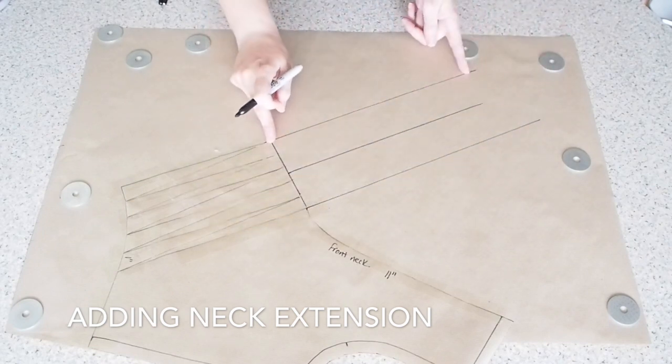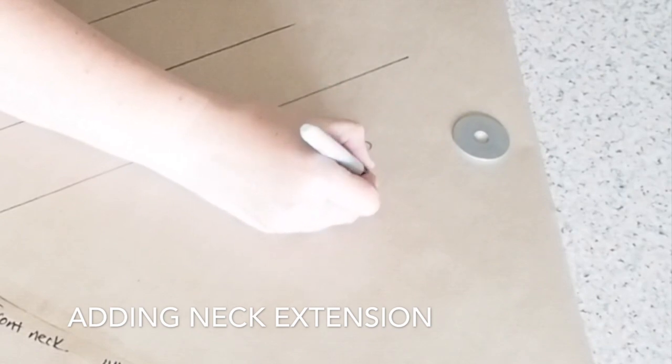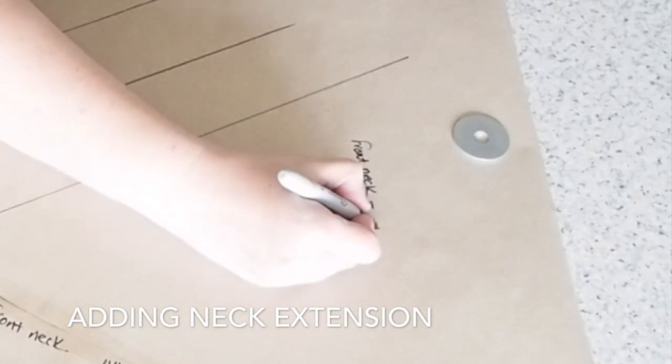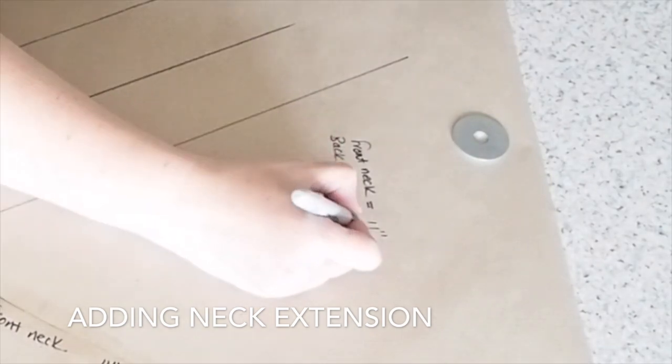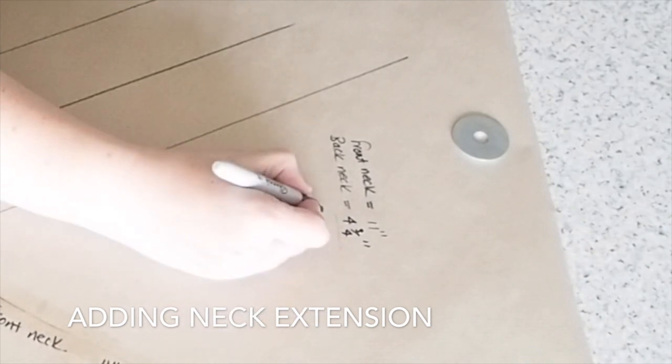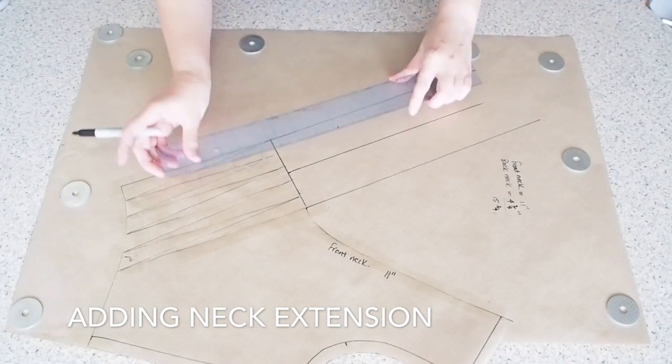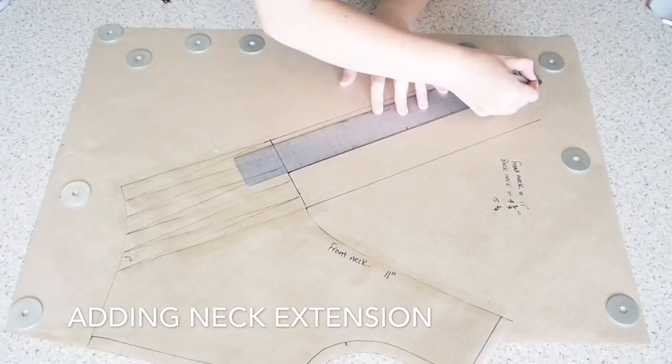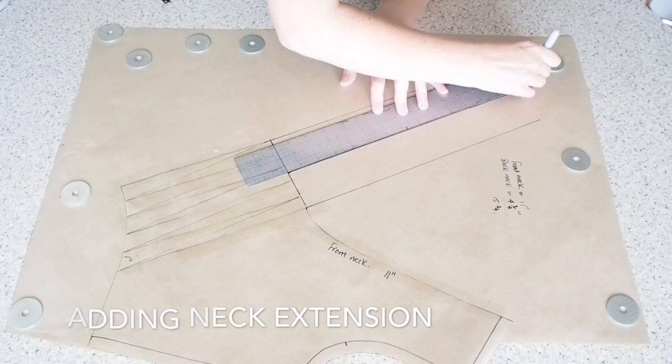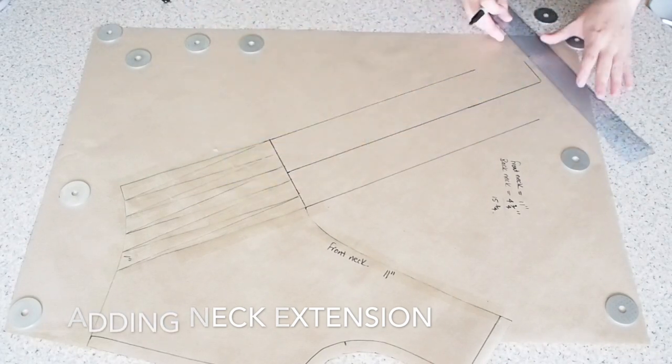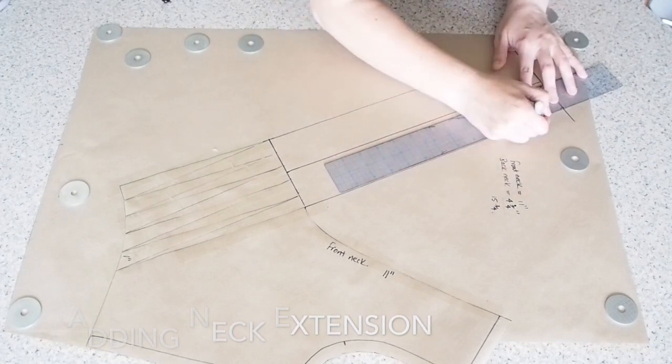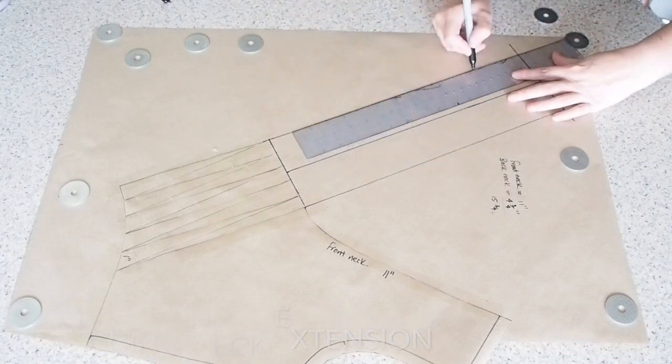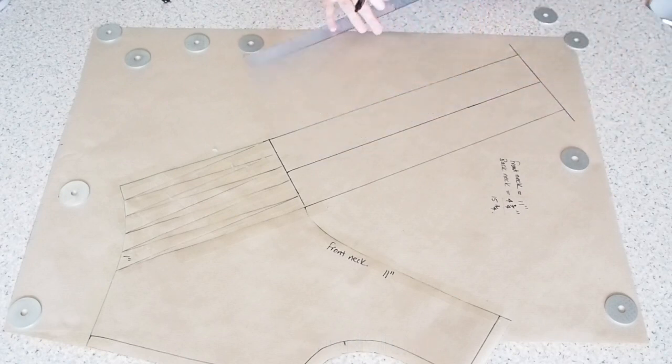And to finish off my extension, I now need the measurements for my front and back neckline. So the front you'll remember was 11 inches, and the back 4 and 3 quarter inches. So just adding those together to get the full extension, which is 15 and 3 quarter inches. So now I'm just going to measure up those lines you just see me draw, 15 and 3 quarter inches. And that's my neck extension done.